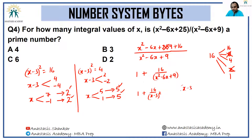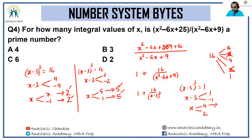The last case is (x − 3)² = 1, so x − 3 = 1 or −1, meaning x = 4 or x = 2. In either case the value of the expression turns out to be 1 + 16/1 = 17, which is prime. ✓ All 6 cases are acceptable, so the answer is option C: 6.